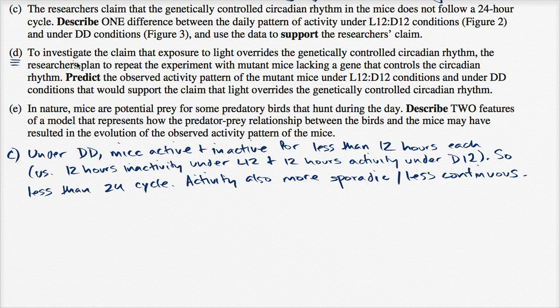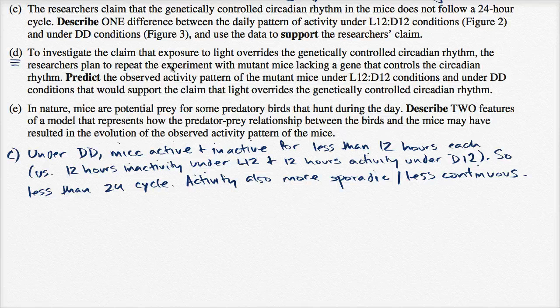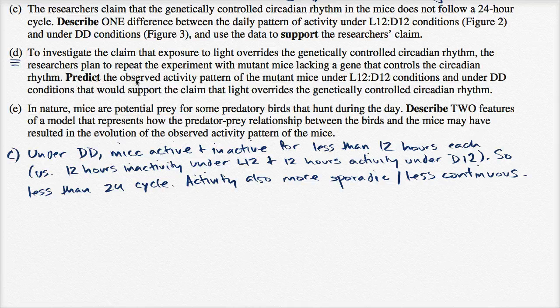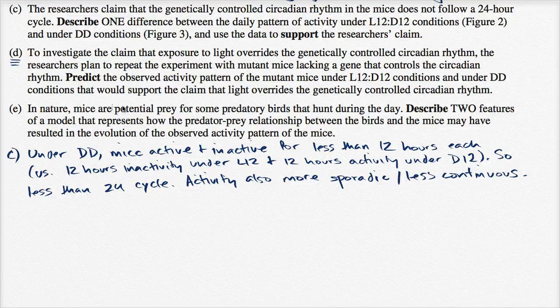Alright, part D. To investigate the claim that exposure to light overrides the genetically controlled circadian rhythm, the researchers plan to repeat the experiment with mutant mice lacking a gene that controls the circadian rhythm. Predict the observed activity pattern of the mutant mice under L12D12 conditions and under DD, continuous darkness conditions, that would support the claim that light overrides the genetically controlled circadian rhythm.